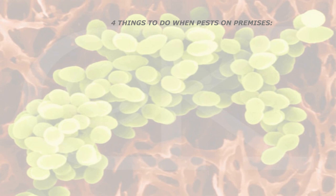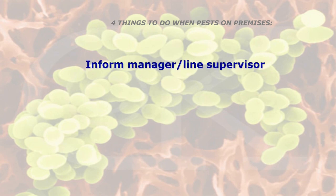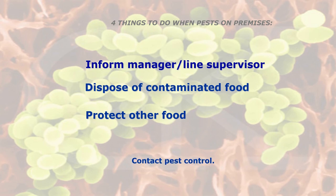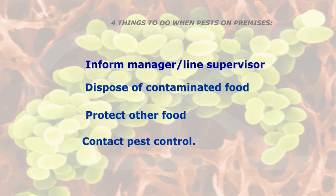Four things to do when you've recognized signs of pests on the premises: first and above all, inform your manager or line supervisor. Second, dispose of the contaminated food. Third, protect any other food that hasn't been contaminated using pest-proof containers. And lastly, contact pest control — the experts — and they will sort out the problem for you.